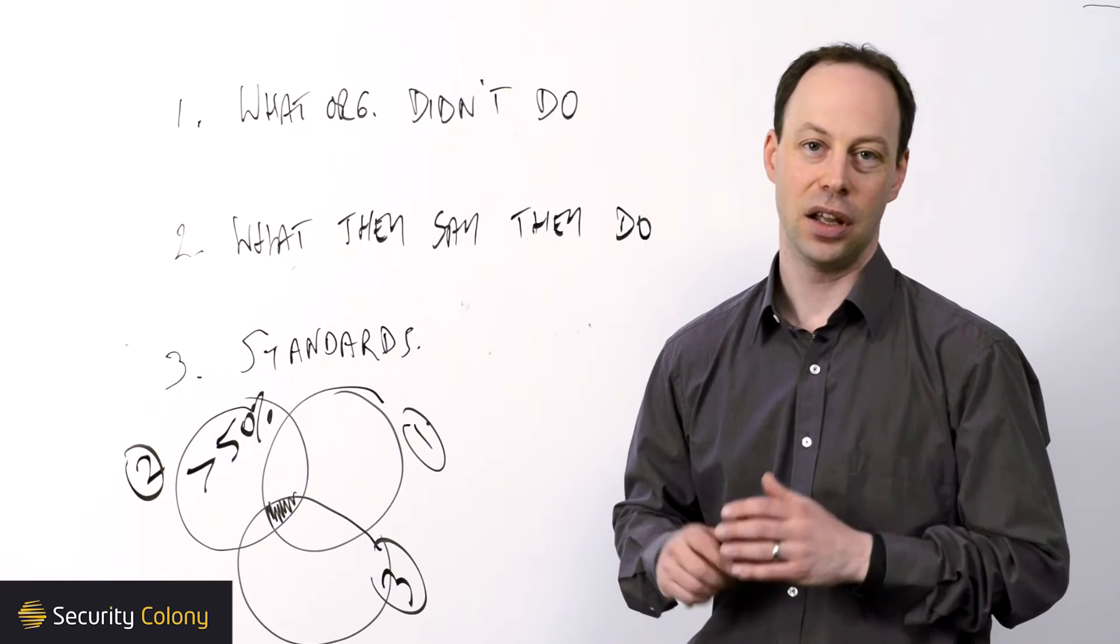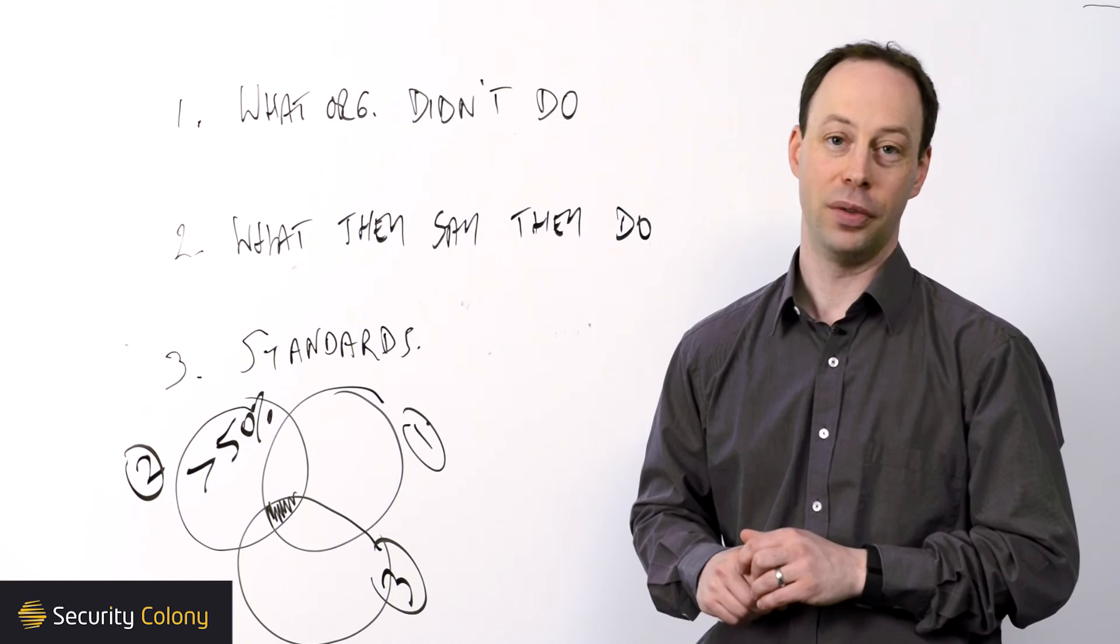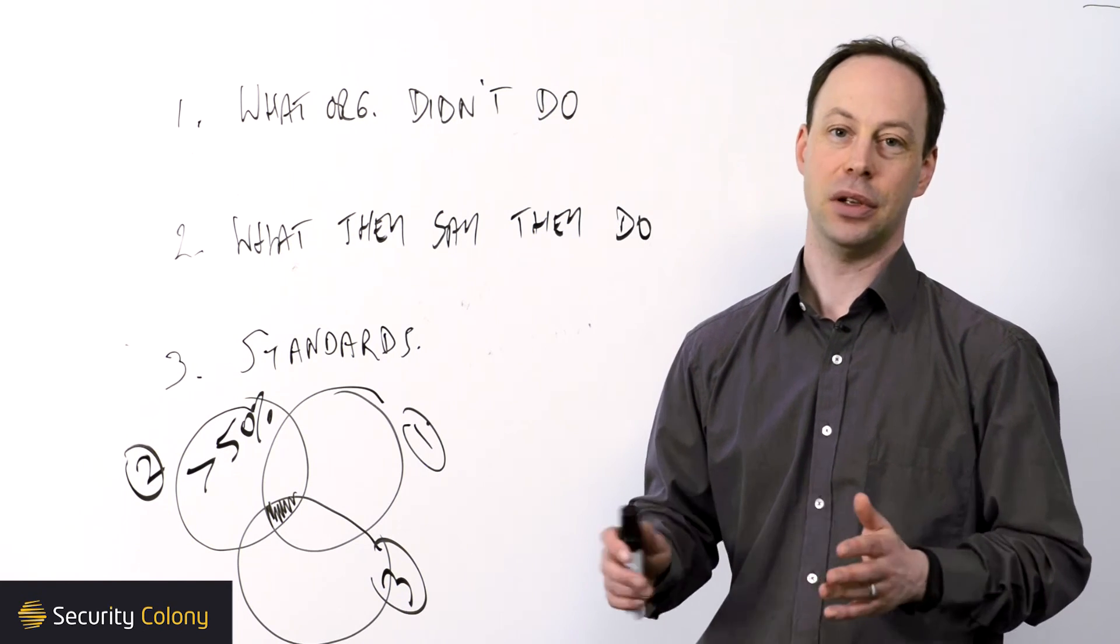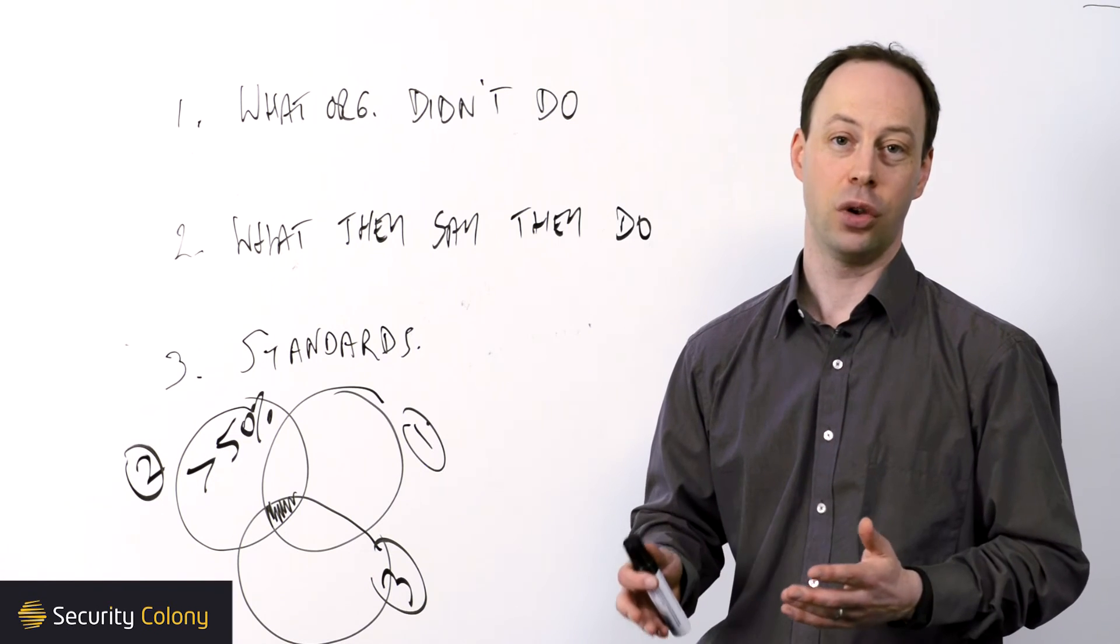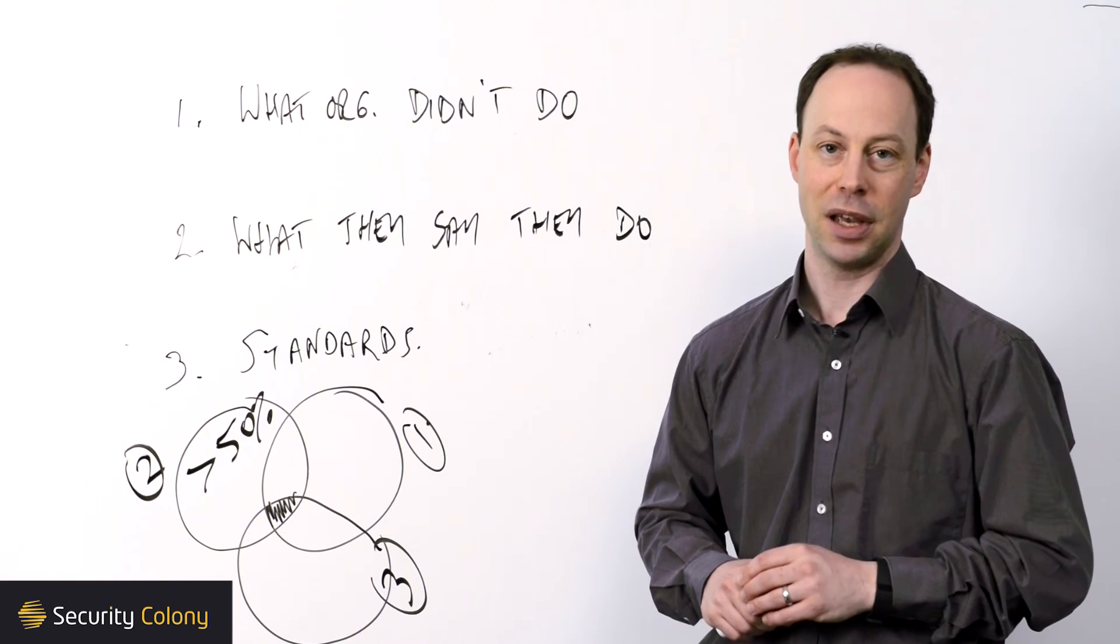One last comment on that is that, almost always, the quality of implementation is going to be more important than the volume of controls that you have in place. It's absolutely the case that implementing fewer controls and implementing them better is going to get you a better result from a security and risk management perspective.